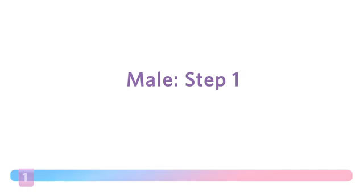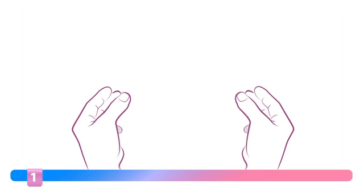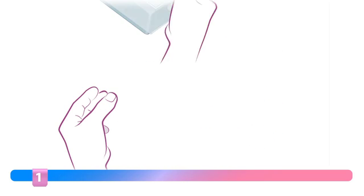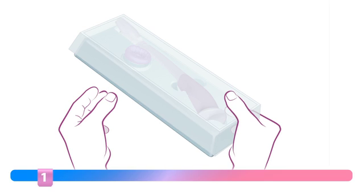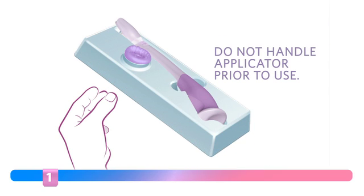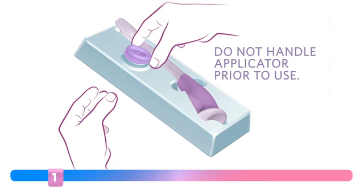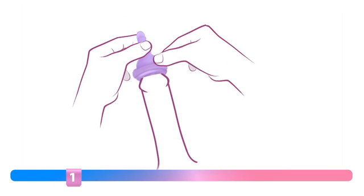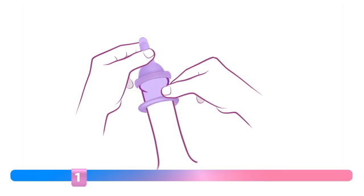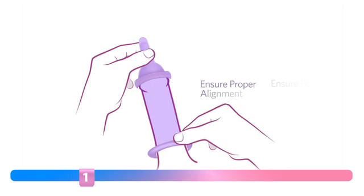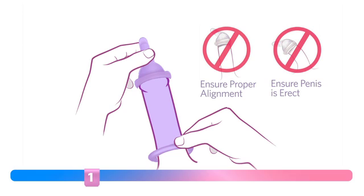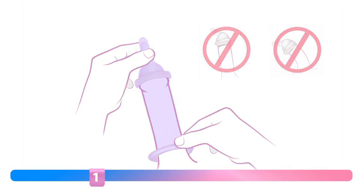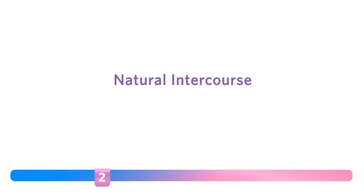Step 1. Wash your hands thoroughly. Remove the conceptacle from the package. Do not use fingernails or anything that can damage the conceptacle. Pinch the tip of the conceptacle gently so the majority of air is not trapped inside. Hold the tip while you unroll the conceptacle all the way to the base of the erect penis, just like putting on a standard condom. Step 2. Natural Intercourse.